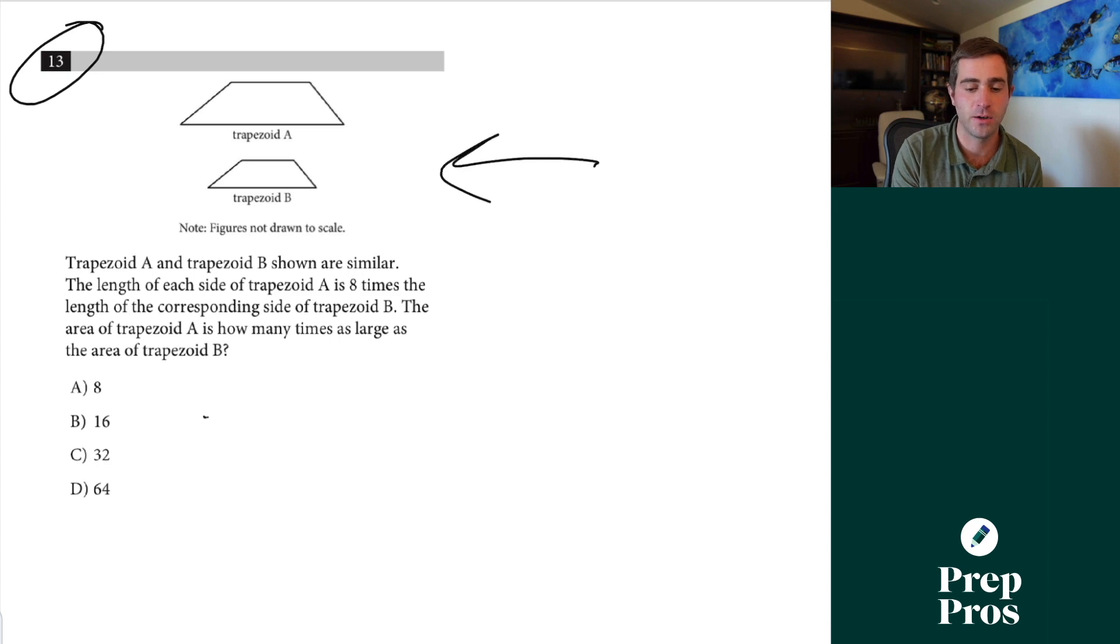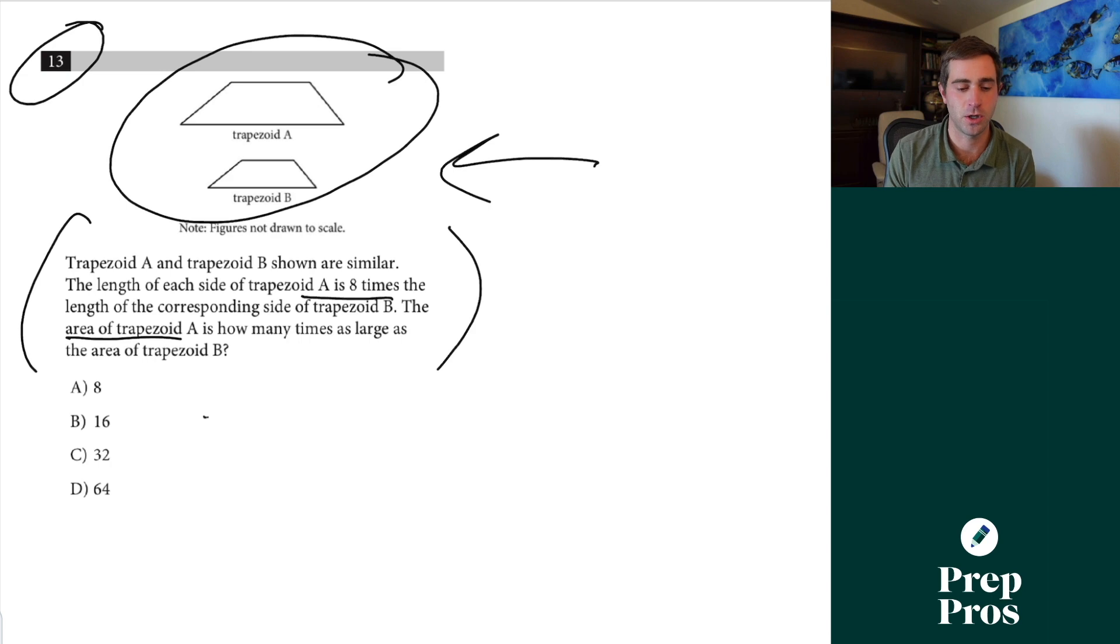Now the first thing we're going to start with has been showing up on the test in 2021 and 2022 like crazy and I anticipate we're going to see the same for 2023. This is scale factors and they have been giving tons of students problems but in a quick minute you're going to learn to master these. So here we see trapezoid A and B shown are similar. The length of each side of trapezoid A is eight times the length of each corresponding side of B. The area of A is how many times as large as the area of B.